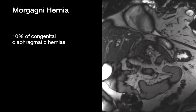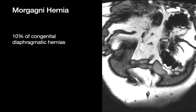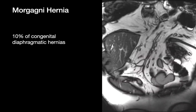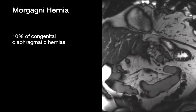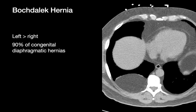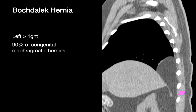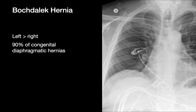Here's an example of a Morgagni hernia — mesenteric fat passes from the anterior abdomen into the anterior chest on this coronal MRI, with a segment of transverse colon and its associated mesenteric vessels. Here are a few images of a right-sided Bochdalek hernia — we can see how the posterior diaphragm doesn't reach the muscular body wall on the sagittal MPR image. These are the corresponding chest x-ray images of this particular Bochdalek hernia.